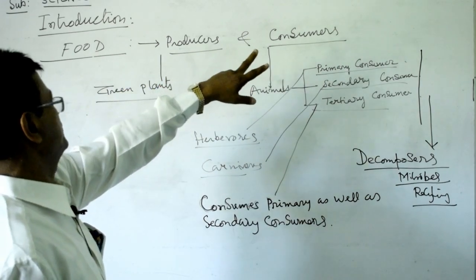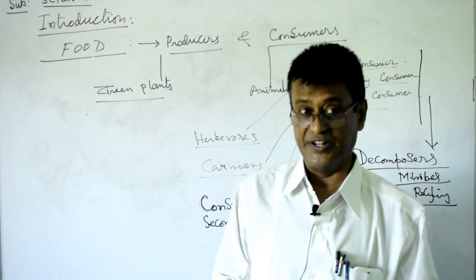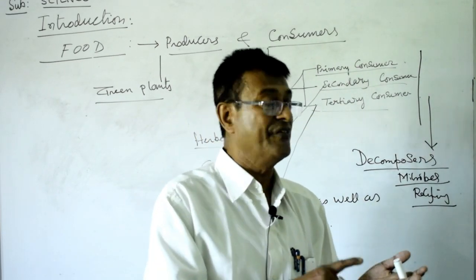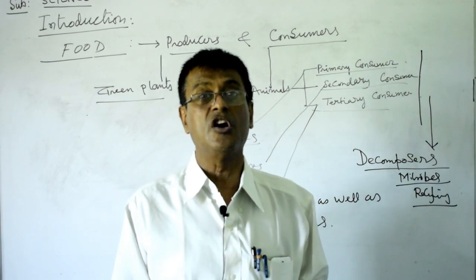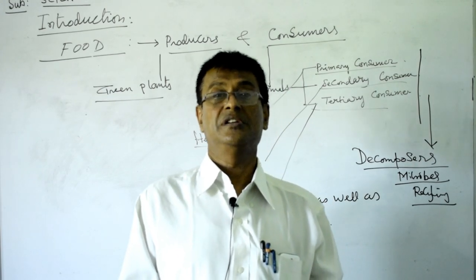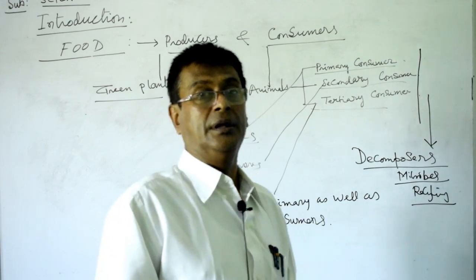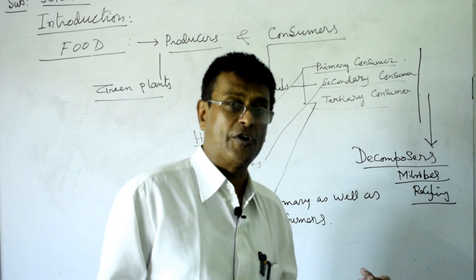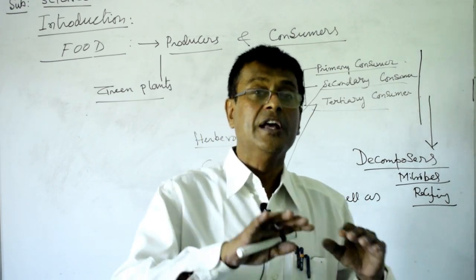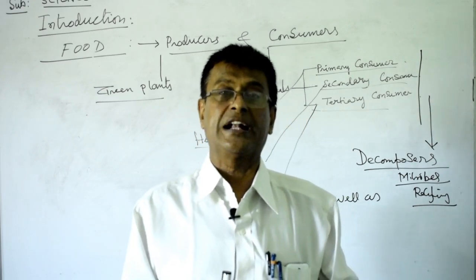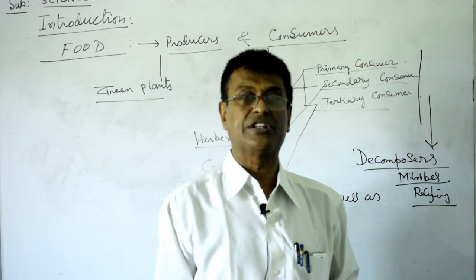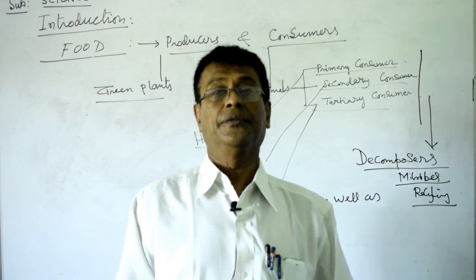Now we go to food producers and consumers. The producers are the green plants. Green plants have chlorophyll and can collect carbon dioxide from the air, mineral salts along with water through the roots, and finally produce carbohydrates — that is glucose. That is the production of food. The byproduct is oxygen, which is very important for the surface of the earth, because this oxygen keeps the balance of oxygen and carbon dioxide in the atmosphere.